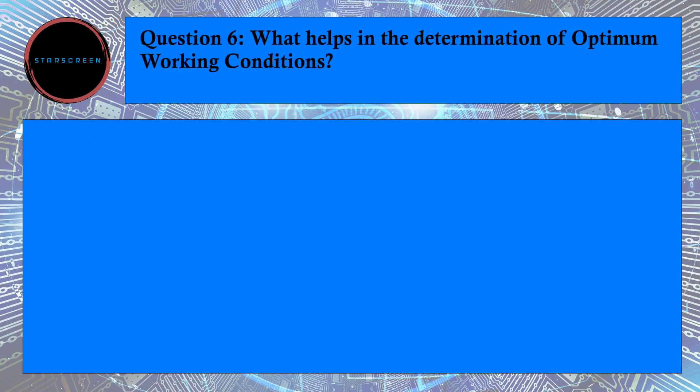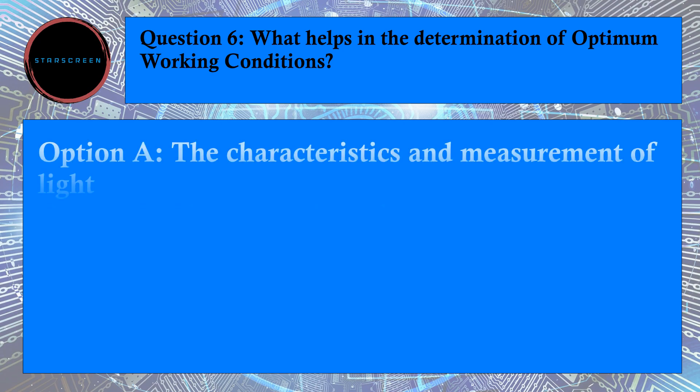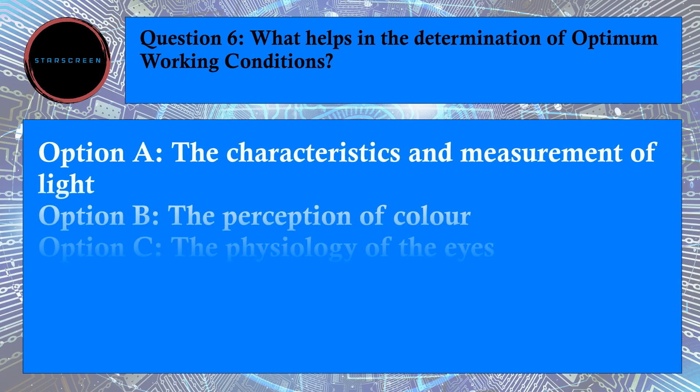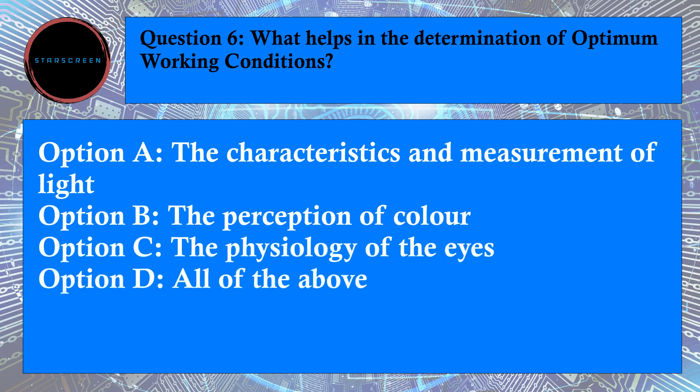Question number 6: What helps in the determination of optimum working conditions? Option A, The Characteristics and Measurement of Light, Option B, The Perception of Color, Option C, The Physiology of the Eyes, and Option D, All of the Above. Correct answer is D, All of the Above. For answer, refer to ICAO Document 9683, Paragraph number 1.4.43.